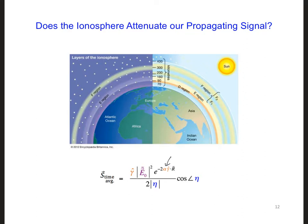So then the question is, does the ionosphere attenuate our propagating electromagnetic signal, or can we just set alpha equal to zero?